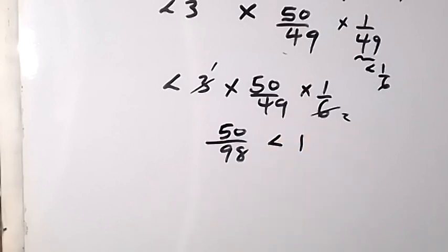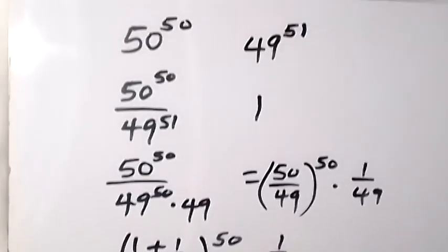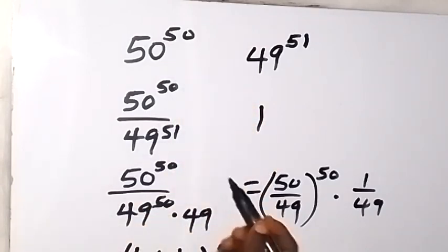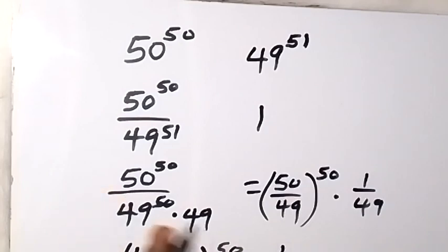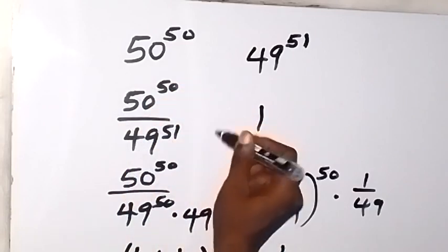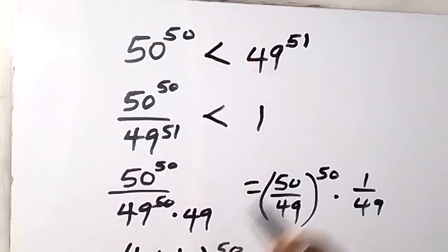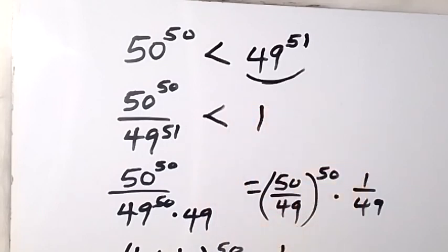So it is less than 1. Then when we compare this — what we are solving is that the number on the left-hand side, which is 50 raised to the power of 50 over 49 raised to the power of 51, is less than 1. Since this number is less than 1, it means 50 raised to the power of 50 is less than 49 raised to the power of 51. So that means 49 raised to the power of 51 is the largest number. Thank you for joining us in this class — don't forget to subscribe to this channel for more videos. Bye for now.